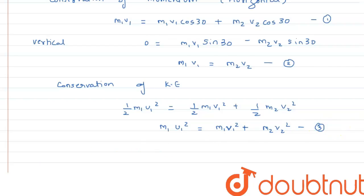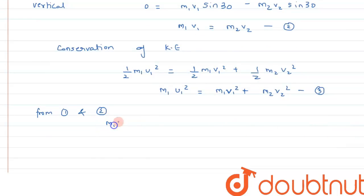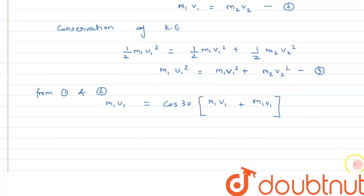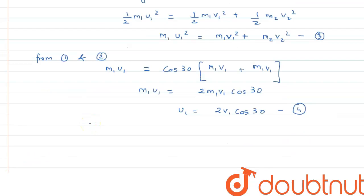From equations one and two, we can factor out cos30: m1*u1 = cos30 * (m1*v1 + m2*v2). Substituting m2*v2 = m1*v1 from equation two, we get m1*u1 = 2*m1*v1*cos30. The m1 cancels, so u1 = 2*v1*cos30. This is equation number four.